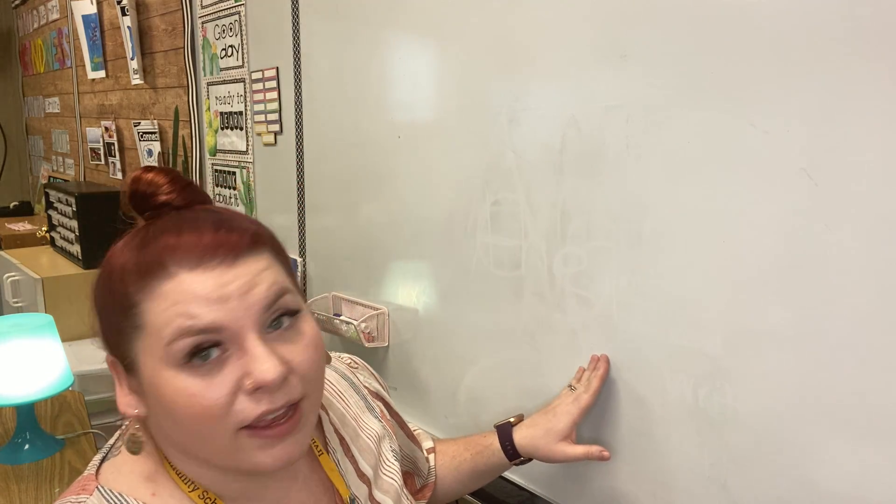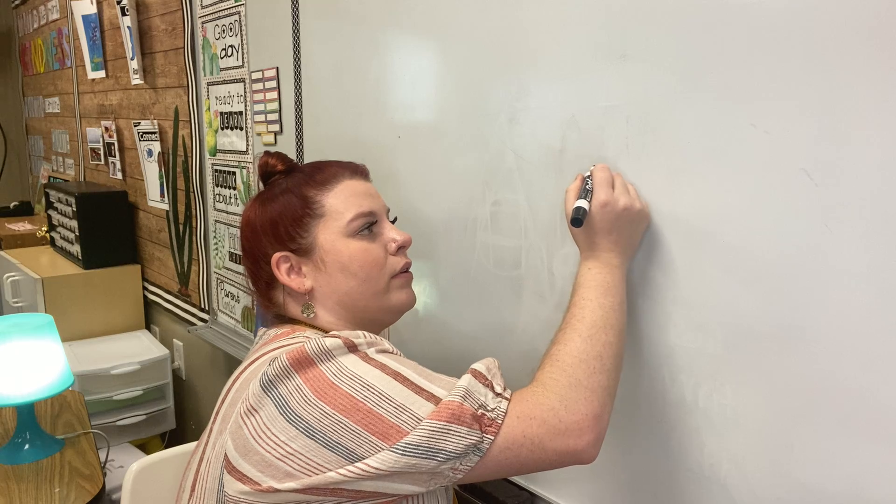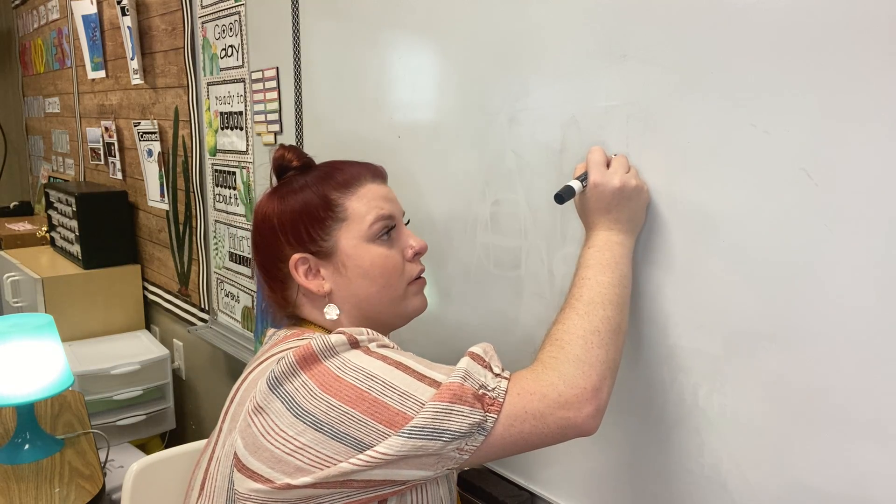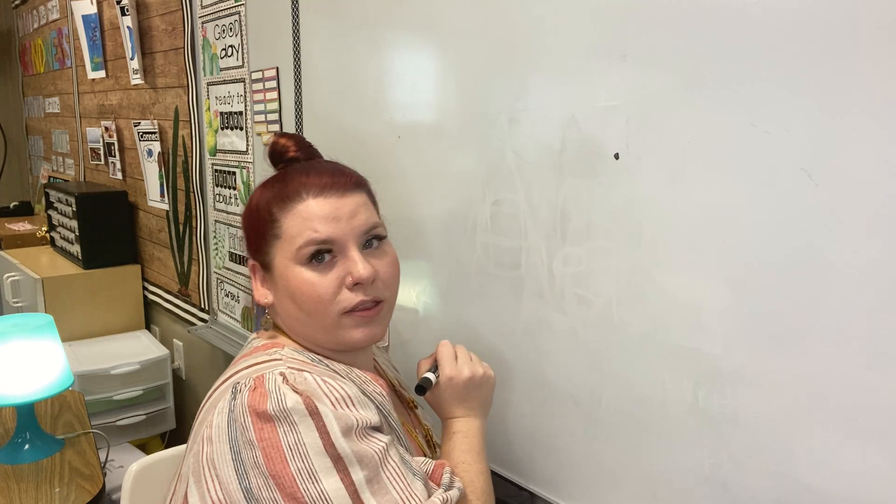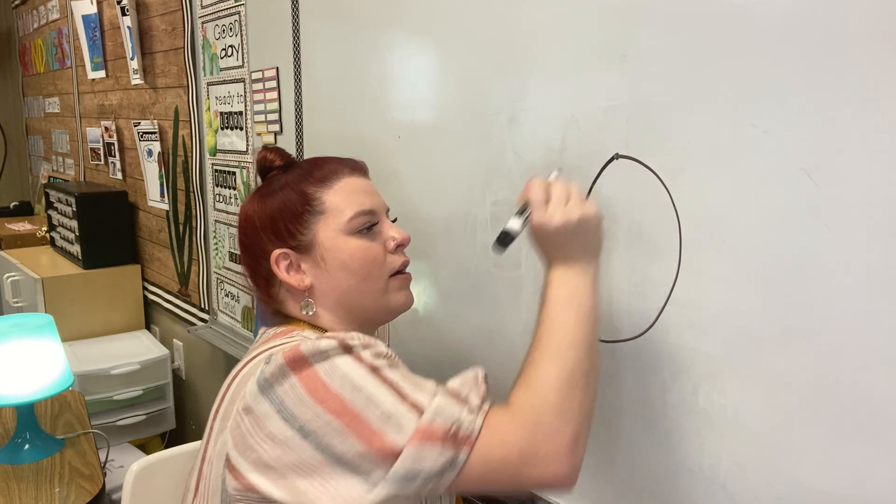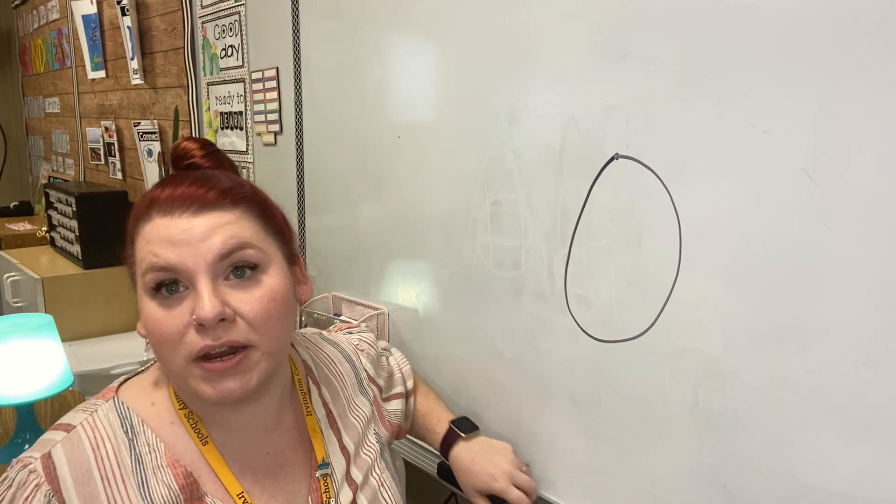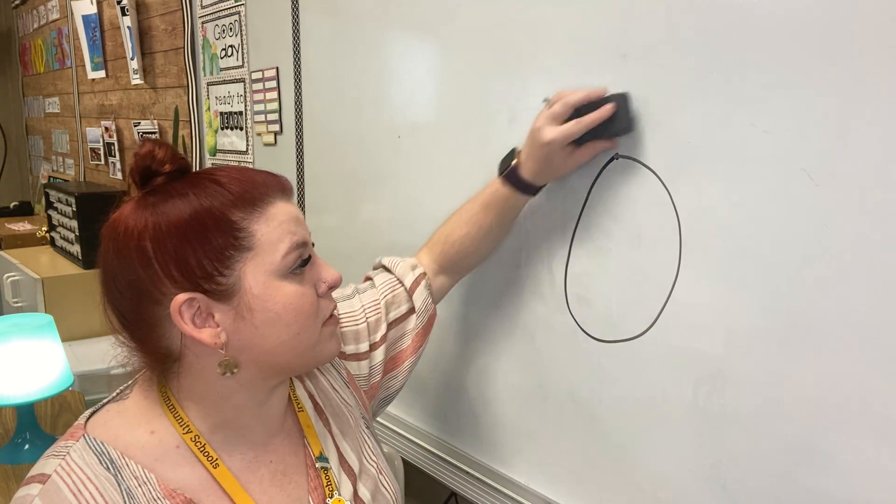So what we're going to be doing today is we're going to be writing our numbers. So first let's do 0. We're going to start at the top, and it always helps to put a little dot there. Start at the top and go all the way around. We've got a big 0, and remember 0 is nothing. So we'll go ahead and practice that. Pause the video if you need some time to write it.